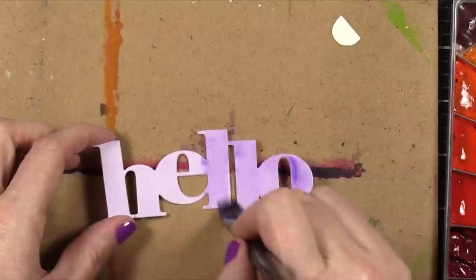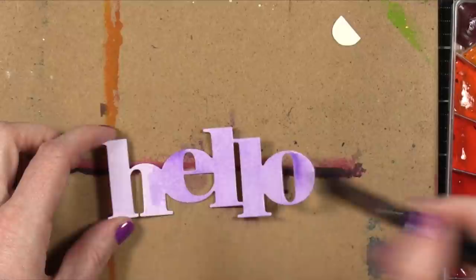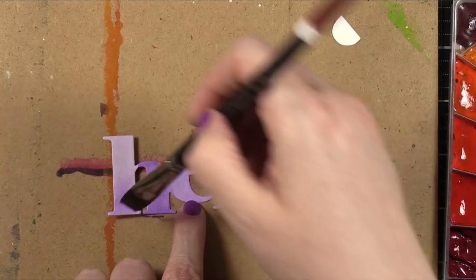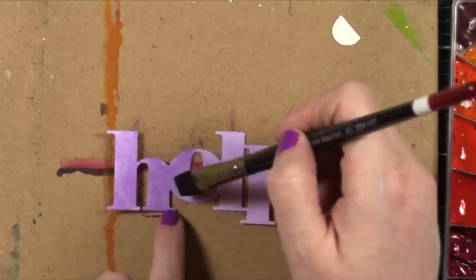And you may have noticed that I started painting this while it was still sort of puzzle pieced in the negative area from when I die cut it. And I thought maybe that would make it a little bit easier to paint, but in actuality, it was easier just to hold it down in very small sections and just paint away. So that's what I did.